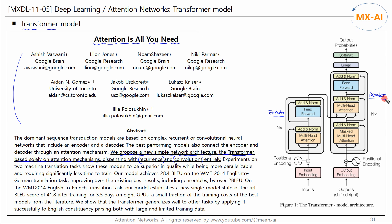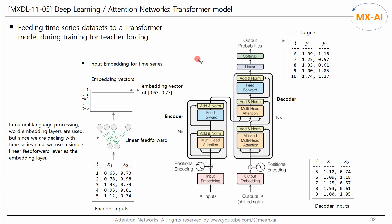This model was designed for natural language processing, but here we will apply it to time-series forecasting. In later natural language processing tutorials, we will use it to create machine translators or chatbots. Since the Transformer also has an encoder-decoder structure, the method of inputting data is the same as the existing seq2seq model. The example below is the data used in the previous seq2seq model.